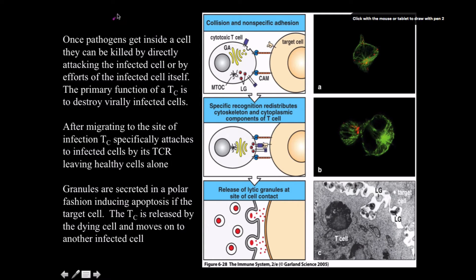Once pathogens get inside a cell and start infecting it, the cell presents peptides on MHC class I molecules. The primary function of a cytotoxic T cell is to destroy virally infected cells. After migrating to the site of infection, cytotoxic T cells specifically attach to infected cells via their T cell receptors, leaving healthy cells alone.